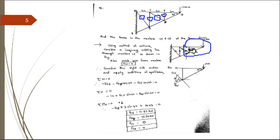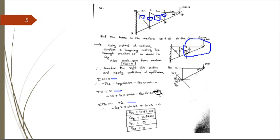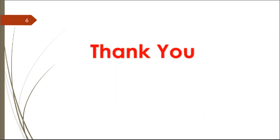Considering the right-hand side portion and drawing the free body diagram with forces FCE, FEF, and FDF, and applying conditions of equilibrium — summation of horizontal forces equals zero, summation of vertical forces equals zero, and summation of moments about point F equals zero — and solving the simultaneous equations, we get the force in member CE = 11.92 kN, FDF = 15.56 kN, CF = 0, and CD = 0. I hope this video will be fruitful for you to understand the method of sections for the analysis of trusses. Thank you.